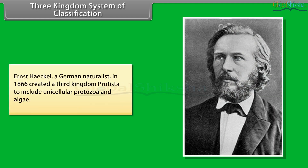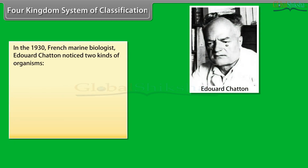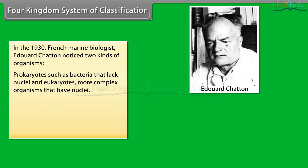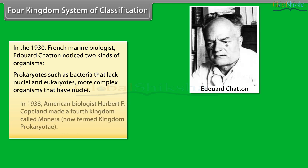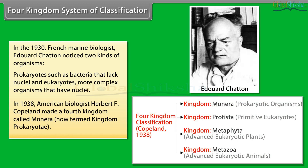In the three kingdom system of classification, Ernst Haeckel, a German naturalist, in 1866 created a third kingdom, Protista, to include unicellular protozoa and algae. In the four kingdom system, French marine biologist Edward Chatton in the 1930s noticed two kinds of organisms: prokaryotes, such as bacteria that lack nuclei, and eukaryotes, more complex organisms that have nuclei. In 1938, American biologist Herbert F. Copeland made a fourth kingdom called Monera, now termed kingdom Prokaryota.